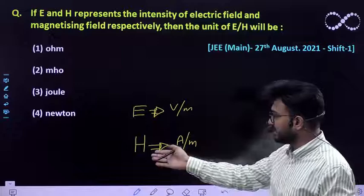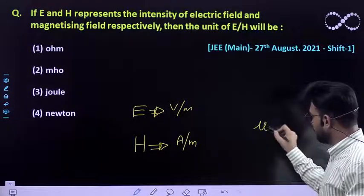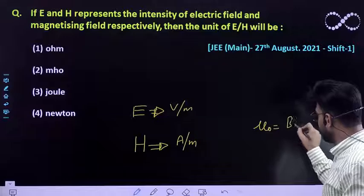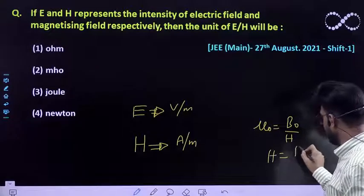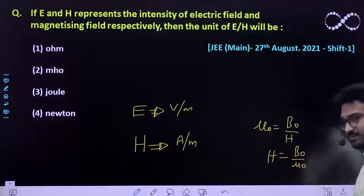This is its unit. We also know the relationship: μ₀ is given by B₀/H, or H is given by B₀ (magnetic field) divided by magnetic permeability.